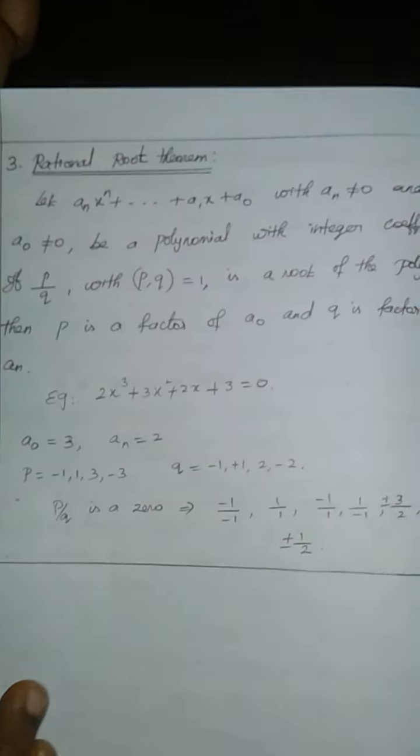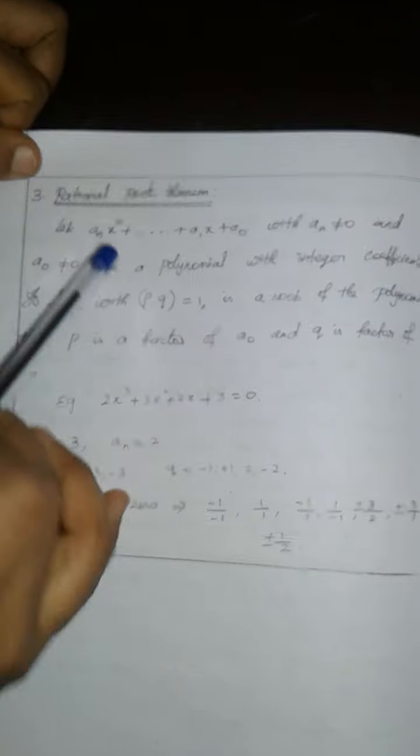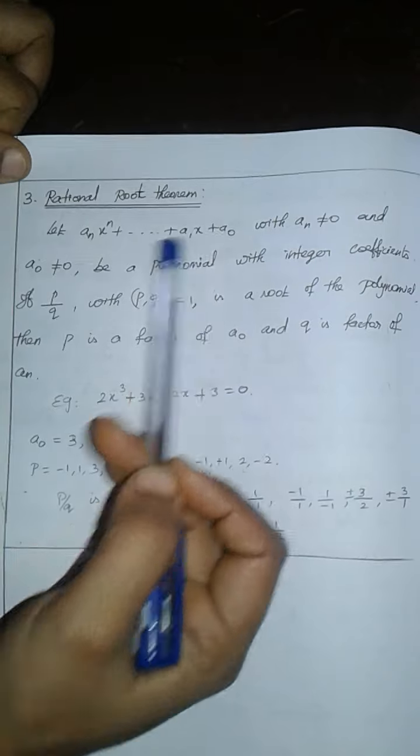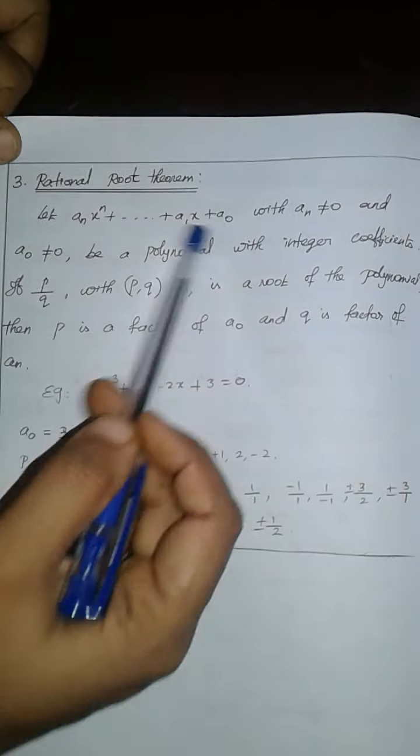If you write this rational root theorem. In a polynomial equation, in a higher degree coefficient, you can add constant value. Higher degree coefficient is an and constant value is a0.